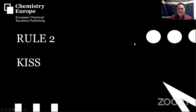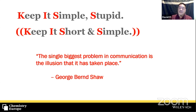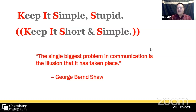Rule number two is KISS — not kissing per se, but KISS as an acronym. KISS is known in many writing and grammar circles as 'keep it short and simple,' or 'keep it simple, stupid.' It's a nice acronym to remember to keep things short and simple. There's a nice quote from George Bernard Shaw saying that the biggest problem in communication is the illusion that it has taken place.